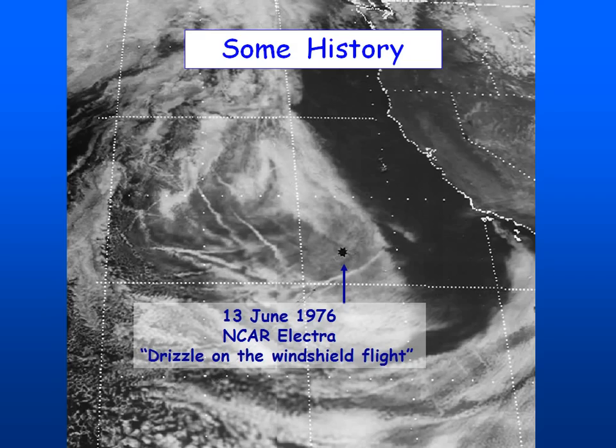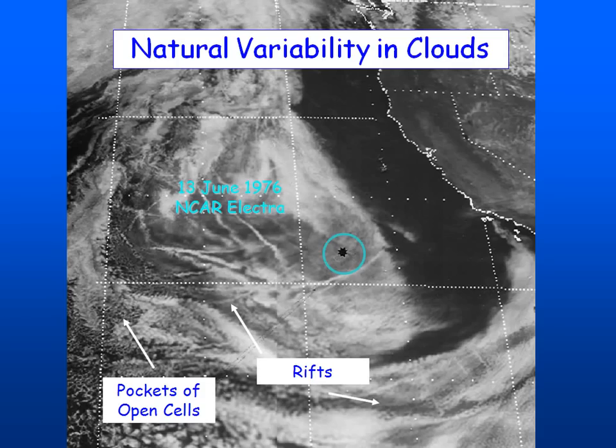The awakening came on the 'drizzle on the windshield' flight. This was before real-time displays of cloud particles, and we're going into these little wimpy clouds — a couple of 300 meters thick — and we've got rain or drizzle in these clouds. At that point, we realized that cloud microphysics are important and it's not just simply a mixed layer where turbulence pretty well takes care of itself. You can see from the satellite image just how large the natural variability is.